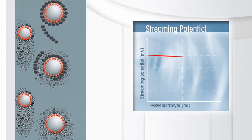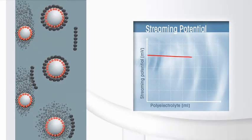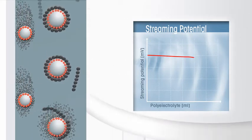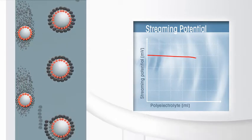Since free-floating particles make only a minor contribution to the streaming potential, the particle charge detector will display only a little decrease of the signal, although titrant is added continuously.